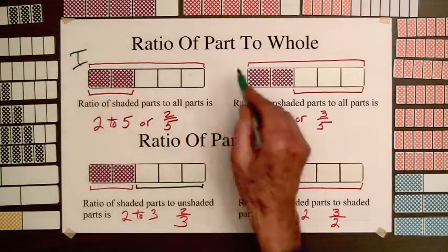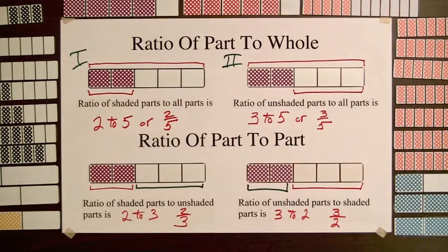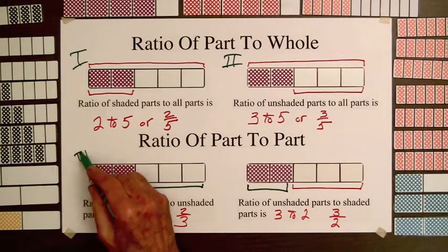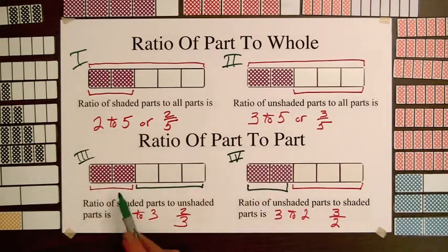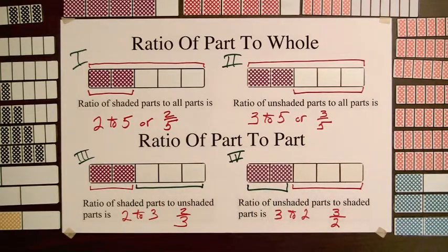In 1 and 2, we compared part of the bar to the whole bar. In 3 and 4, we're comparing the shaded part to the unshaded, and the unshaded to the shaded.